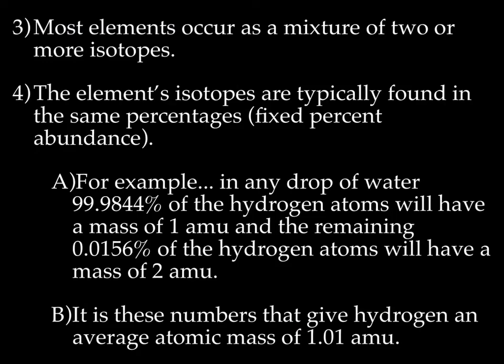Most elements occur as a mixture of two or more isotopes. Again, an isotope is an atom that has the same number of protons, but different neutrons. So the isotopes of elements are typically found in the same percentages, also known as fixed percent abundance. So for example, if we were to take a drop of water from anywhere, from the lake, the ocean, from your sink, from my sink, from the classroom sink, from wherever, in any drop of water, 99.9844% of the hydrogen atoms will have a mass of 1 amu, which means all it's made up of is one proton and one electron.